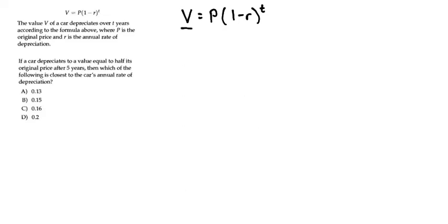V is the value of the car, T is the number of years it depreciates, P is the original price of the car, and R is the annual rate of depreciation.